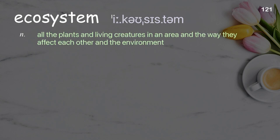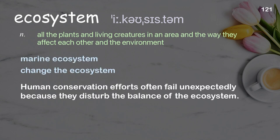Ecosystem: all the plants and living creatures in an area and the way they affect each other and the environment. Examples: Marine ecosystem. Change the ecosystem. Human conservation efforts often fail unexpectedly because they disturb the balance of the ecosystem.